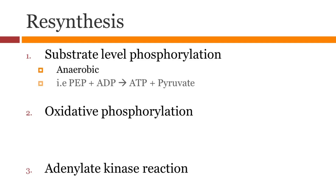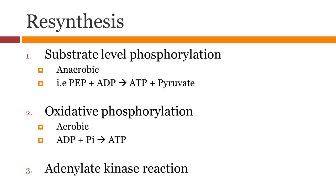Substrate level phosphorylation makes ATP from high energy compounds such as phosphocreatine or phosphoenol pyruvate. It is an anaerobic process. Oxidative phosphorylation makes ATP from ADP through an electrochemical gradient, and it does require oxygen.